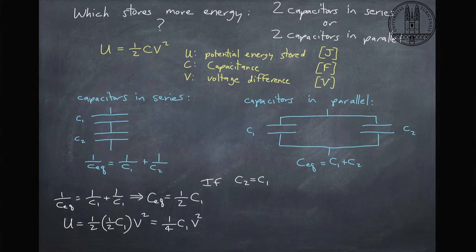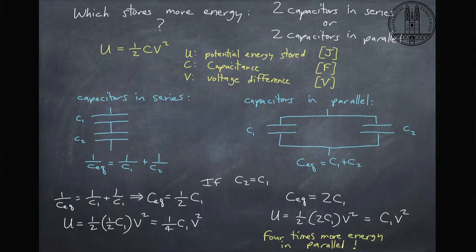The potential energy that's stored therefore from the equation above is one-fourth times C1 V squared. Now when the capacitors are in parallel we add the capacitances, so we create a larger capacitance, and the potential energy is equal to C1 V squared. So we see that we get four times more energy when we connect our capacitors in parallel than in series.